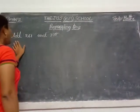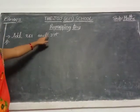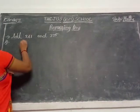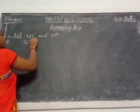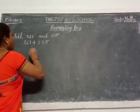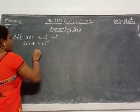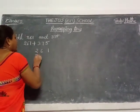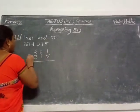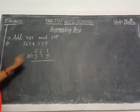Ok children, see here, example number: 261 and 375. That means you write the numbers first, 261 plus 375. So you write these numbers in columns: 261 and 375. That means symbol is plus.